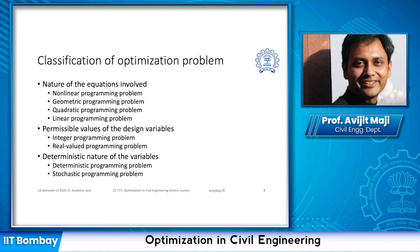The classification of optimization problems can also depend on the nature of the equations involved. If the objective function or the constraints have non-linear equations, the problem is known as a non-linear programming problem. If the variables in the objective function or constraints are products of each other raised to some power, it becomes a geometric programming problem.